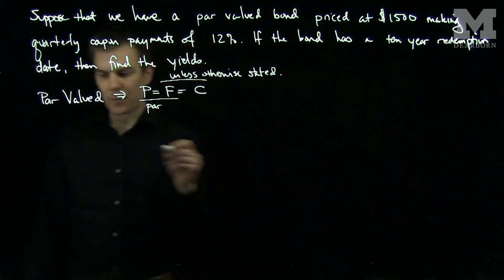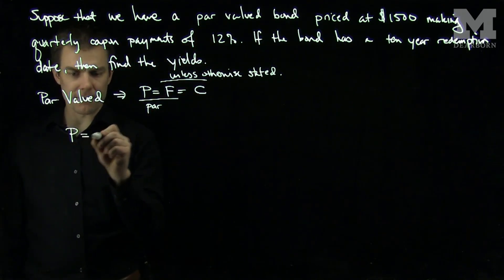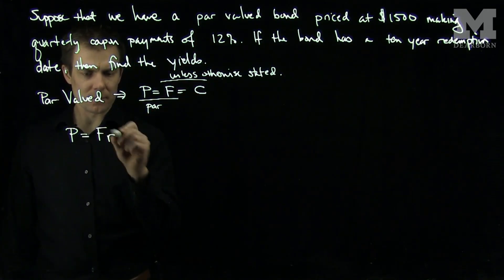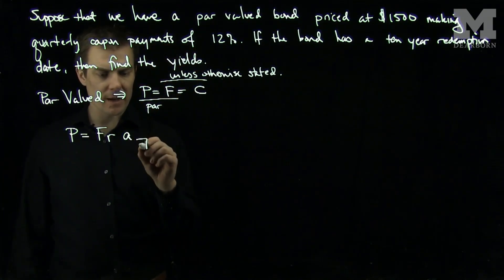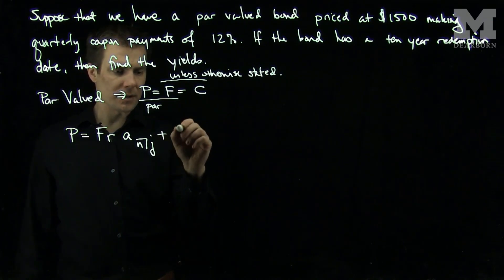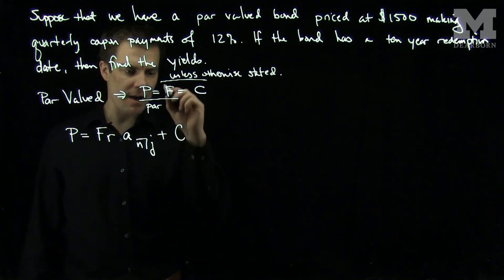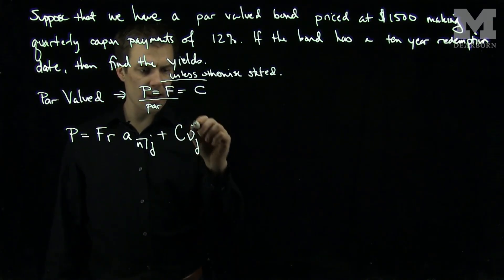Now we can use our pricing formula. We know that the price of a bond is the face value of the bond times the effective coupon rate, A bracket N J, plus C, which in this case is F, nu based on J and N. That's our bond pricing formula.